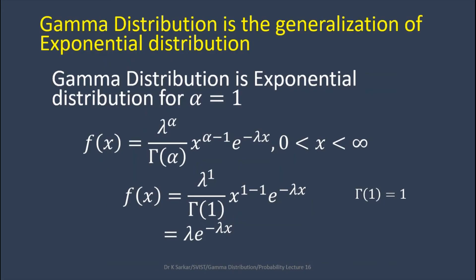Gamma distribution is the generalization of exponential distribution. In the gamma distribution PDF, if we put alpha equals to 1, then we will get the PDF of exponential distribution.